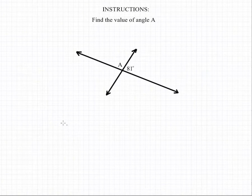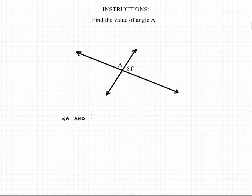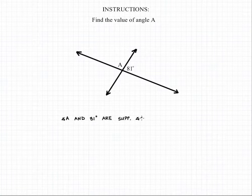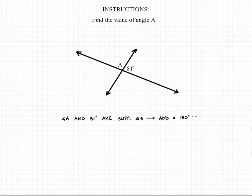The key things to recognize in this diagram are that we have a pair of intersecting lines, and that angle A and the angle that measures 81 degrees are adjacent angles. What that means is that angle A and the 81 degree angle are supplementary — in other words, they add to equal 180 degrees.